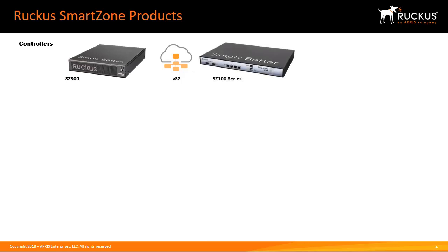The SmartZone 100 manages networks up to 1,024 access points or 3,000 in a cluster, running SmartZone in essentials mode. The Zone Director manages small networks up to 150 access points. The Zone Director is not classified in the SmartZone product line, but it's included here because the Zone Director's configuration can be imported into a SmartZone controller.